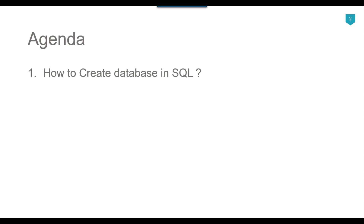If we look from the physical aspects of a database, normally a database will have two types of files on the disk. The first type is the .mdf file, also called the data file or primary data file — all the data from a database will be stored inside a .mdf file. The second type is the .ldf file, which contains information about different transactions performed on the database.